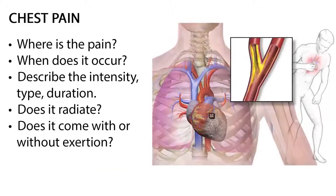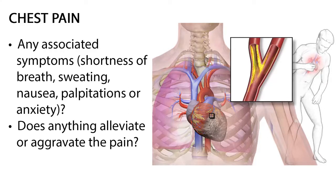Subjective data allows you to gather the patient's common or concerning symptoms, including chest pain. Ask where the pain is, when it occurs, describe the intensity, type, duration, does it radiate, does it come with or without exertion, and any associated symptoms such as shortness of breath, sweating, nausea, palpitations, or anxiety. Also ask does anything alleviate or aggravate the pain.